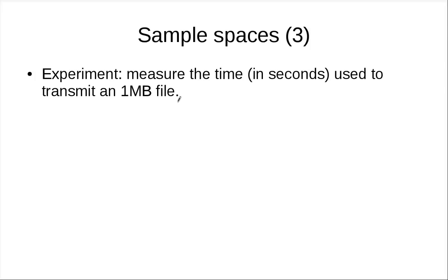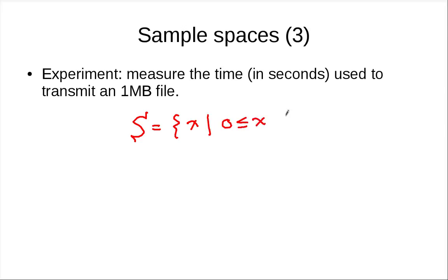The sample space can also be continuous. For example, if you measure the time in seconds used to transmit a one-megabyte file, the sample space S is the set of all real numbers x such that x is greater than or equal to zero — that is, the set of non-negative real numbers.